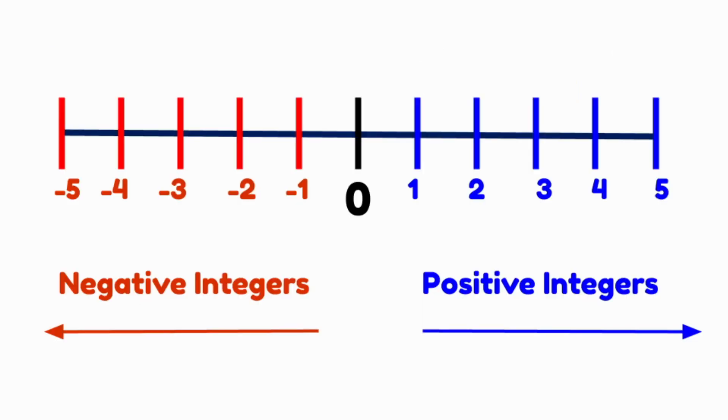To find an integer on a number line, you first have to decide if your number is positive or if it's negative. Positive numbers are always found to the right of the zero on a horizontal number line, while negative numbers are found to the left.